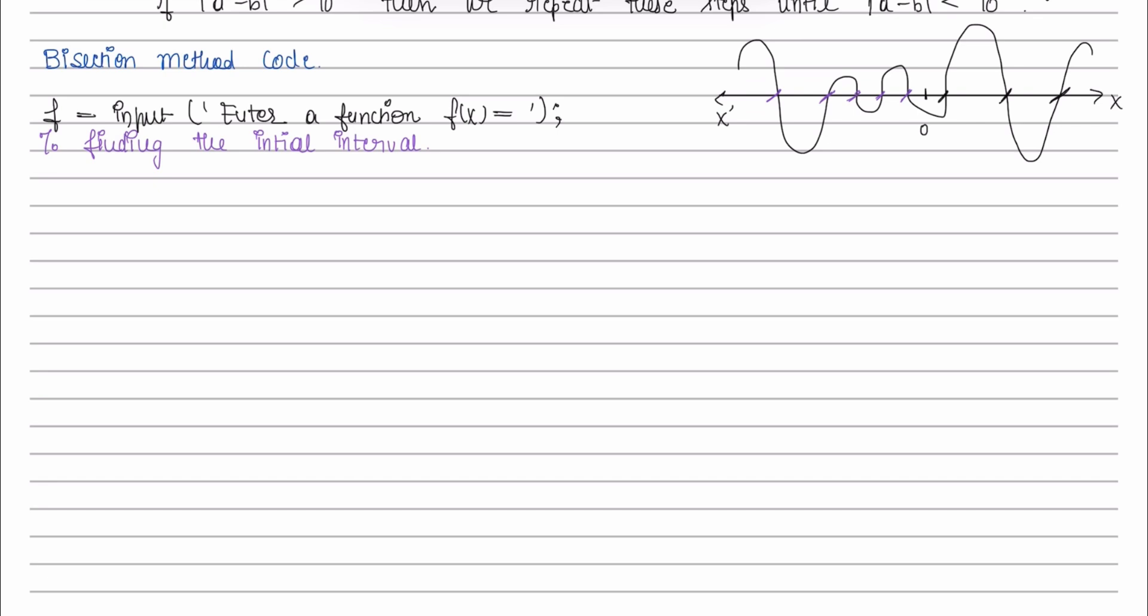To find the initial interval, I am considering a for loop starting from minus 10 with the increment of 1 and terminal point as 10. Please note that I have used this for loop starting from minus 10. You can initialize this for loop from any number, provided that there must exist one root between the initial and terminal point you have considered.